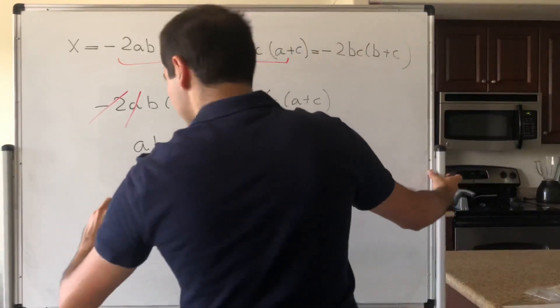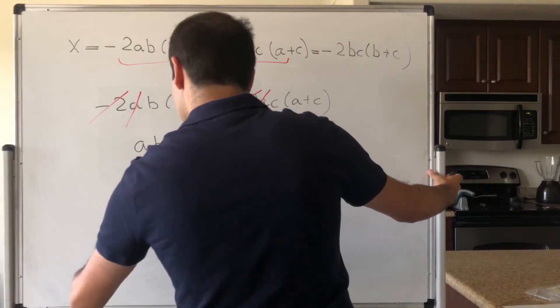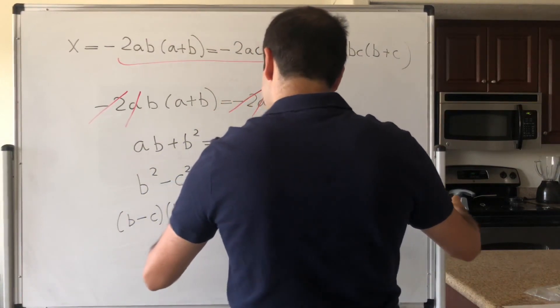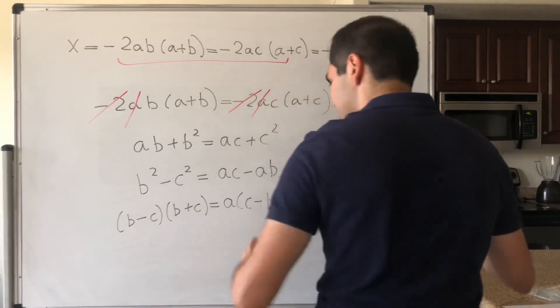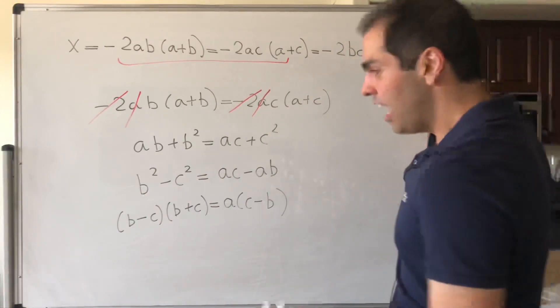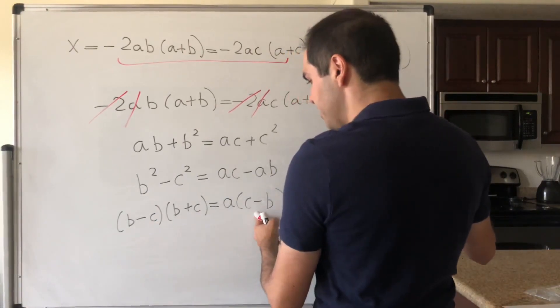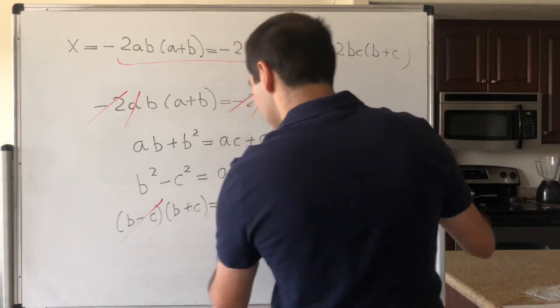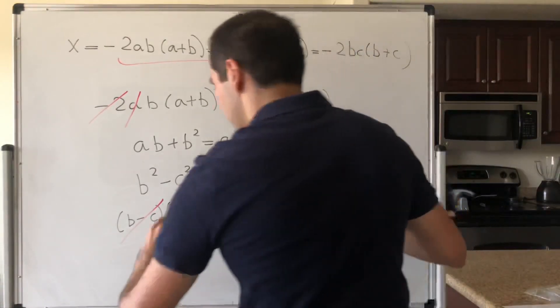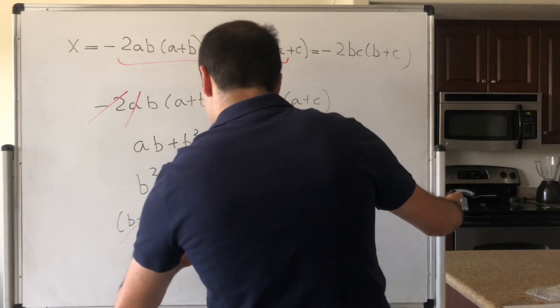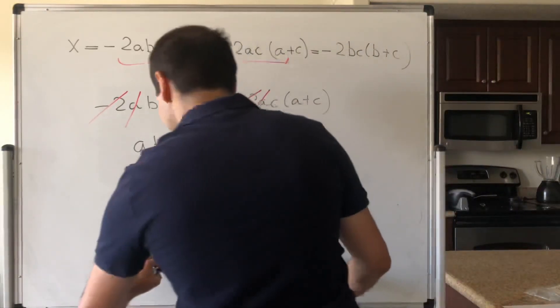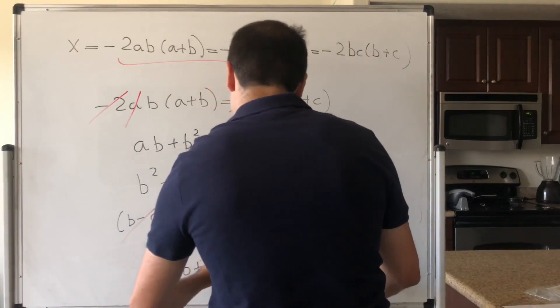And then put all the squares on the left-hand side. So b squared minus c squared equals ac minus ab. And then, for instance, b minus c times b plus c equals a, c minus b. And again, you will see it will actually flow like bread and butter. Because now we can cancel b minus c and c minus b, except with an extra minus sign. And so what we get is that b plus c equals minus a. And then putting minus a on the left-hand side, we get a plus b plus c equals zero.